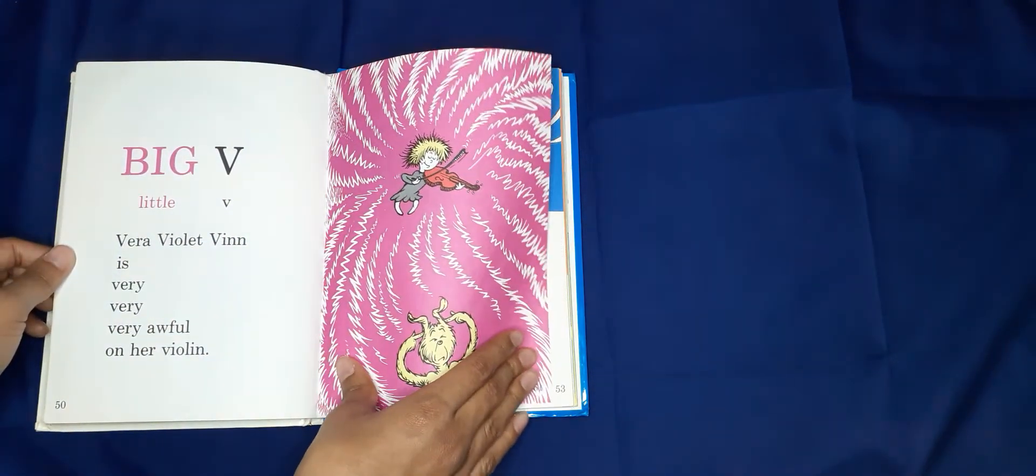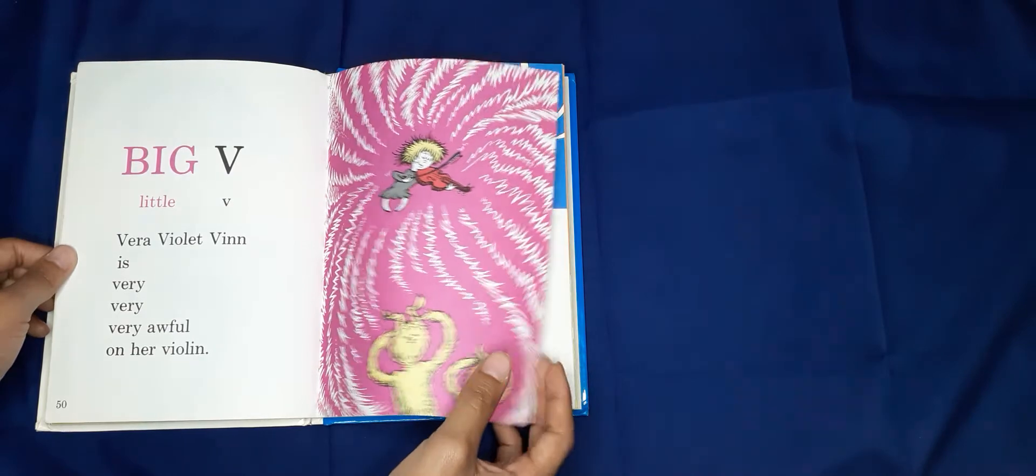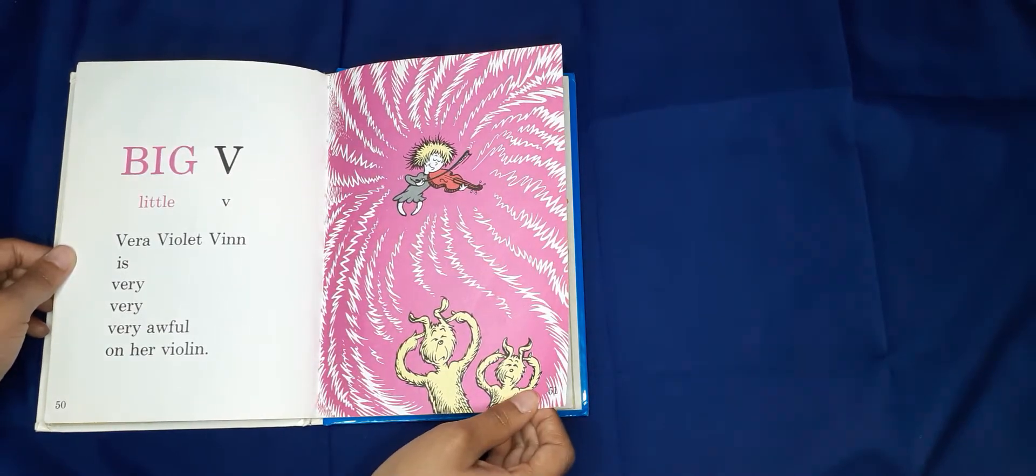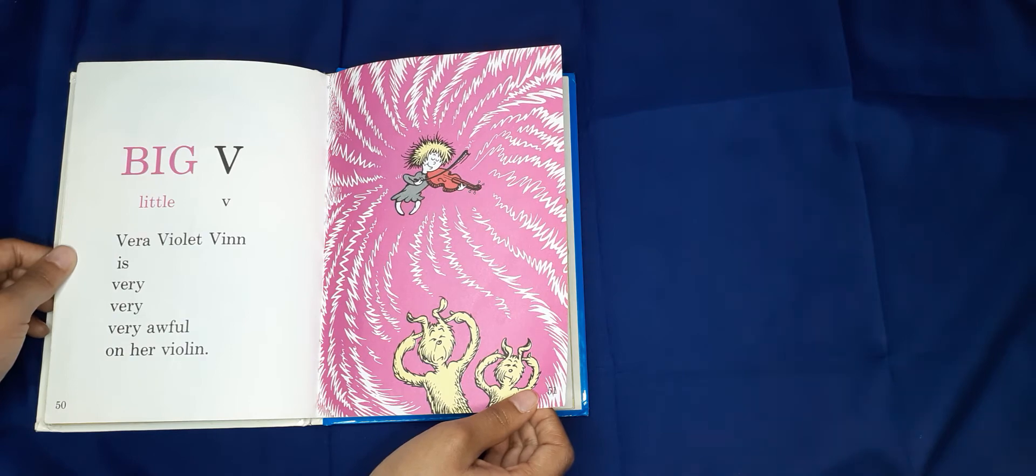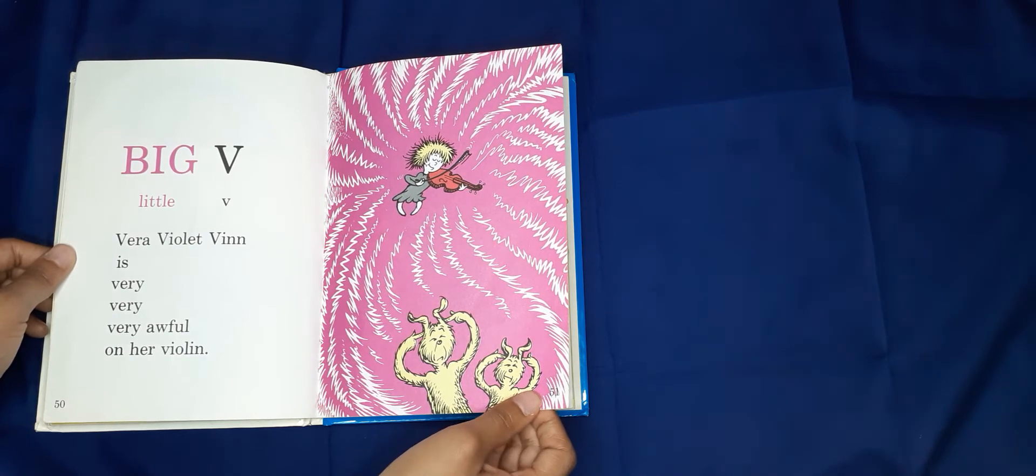Big V, Little V. Vera Violet then is very, very, very awful on her violin.